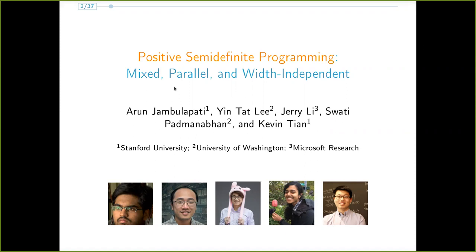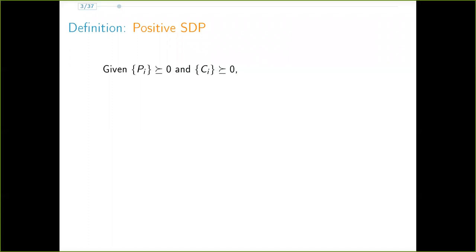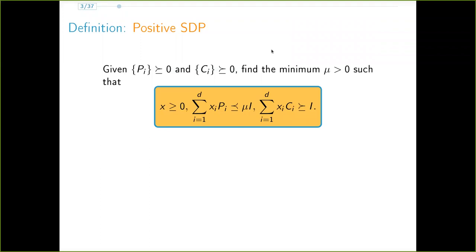We start by defining positive semidefinite programs. Given PSD matrices P1 through PD and C1 through CD, we want to find the minimum positive number mu such that there exists an element-wise non-negative d-dimensional vector x satisfying the following two constraints. First, the sum of the matrices PI scaled by Xi is in the PSD sense at most mu times the identity. And second, the sum of the matrices CI scaled by Xi is, in the PSD sense, at least the identity.